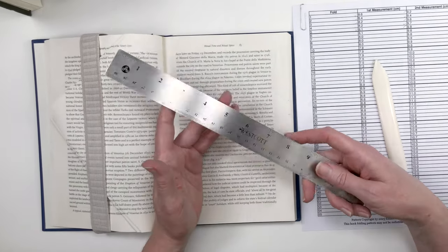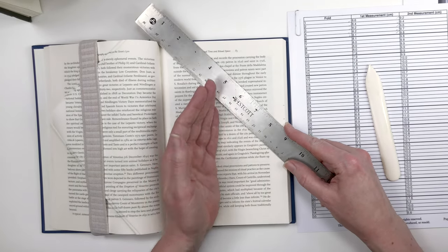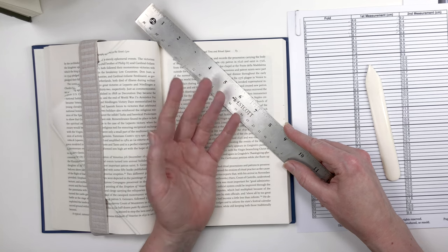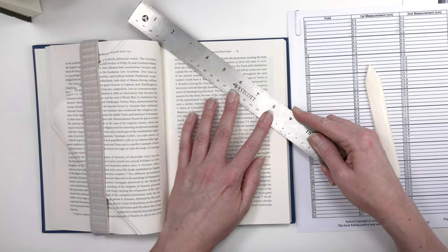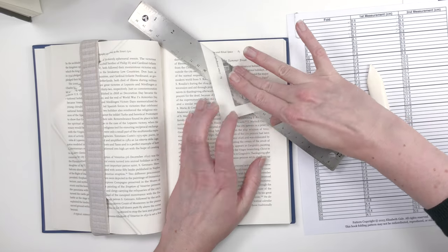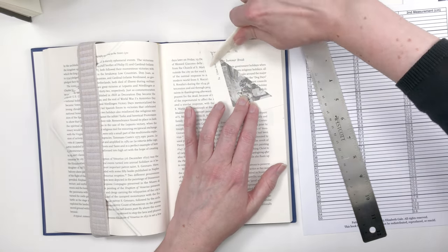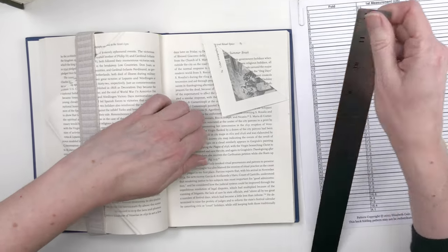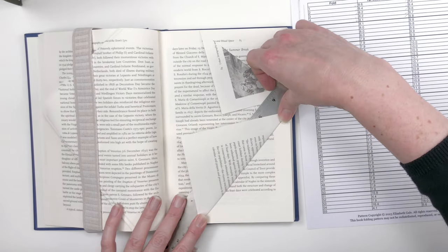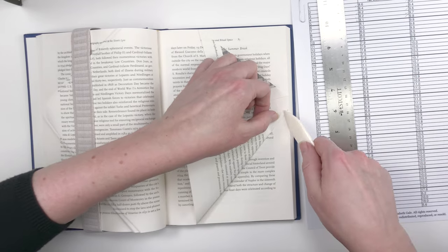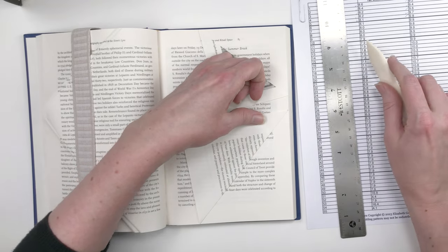And now our fold number four measurements of 8.2 and 9.7. If you like to use a different folding method instead of putting the ruler up against the spine that is perfectly fine. The finished cross will look the same on the edges of the pages no matter which folding method you use. I just prefer to use this method. It works best for me but there's really no right or wrong way to book fold. You just use whichever method you prefer, whichever one works best for you.